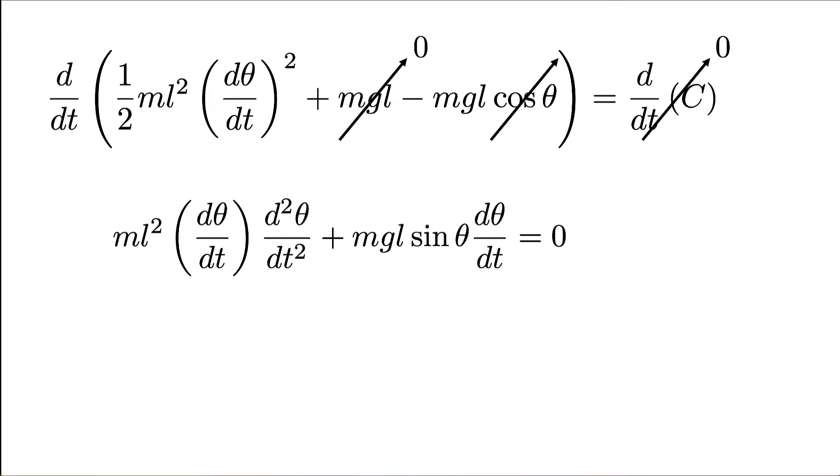The two terms on the left share m, one factor of L, and dθ/dt in common, so I can factor those out. I'm left with L times the second derivative of θ with respect to t, plus g sin(θ), and that equals zero.